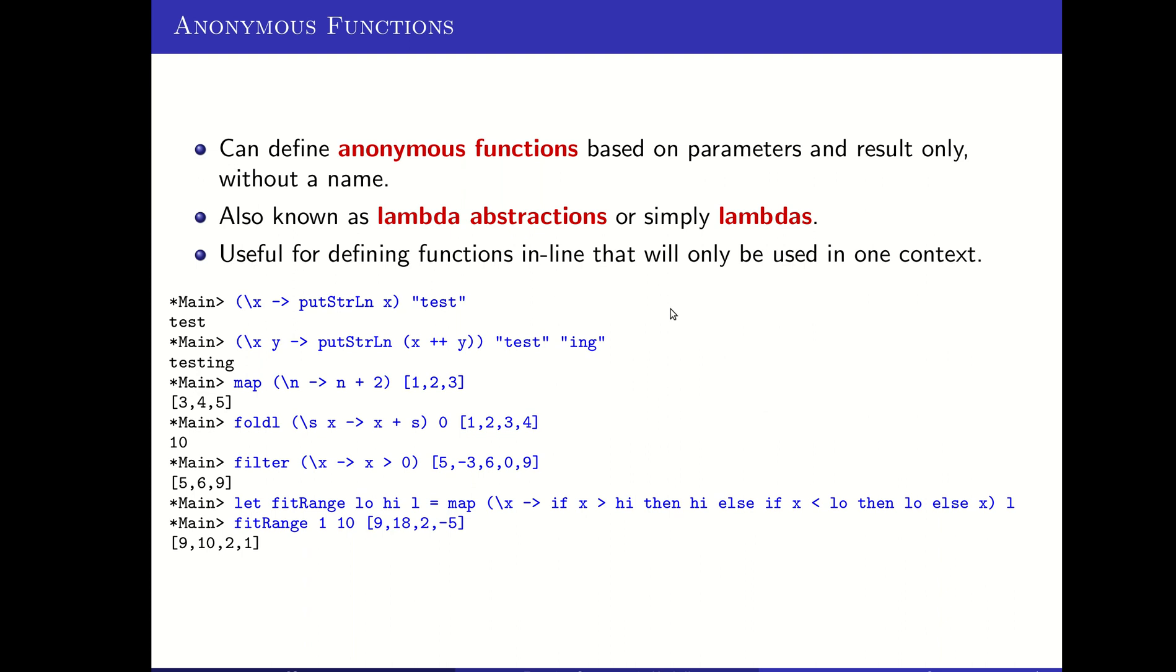I'll show a couple of simple examples and then some cases of how they might actually be useful. Here's a simple example where it's an anonymous function that takes a parameter x. You can see that by the slash x. So it starts with a slash and then lists its parameters. It does the put string line function on x and in the same line as where I've defined that function, I just go ahead and apply it to the string test and it prints out the string test.